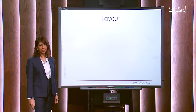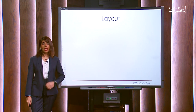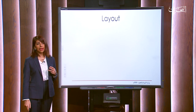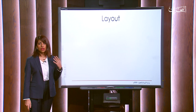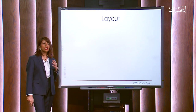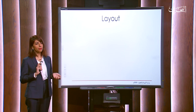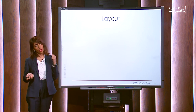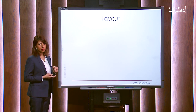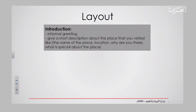Now let's move to the second objective: the layout of a descriptive email. As you know, each piece of writing should have three main paragraphs — the introduction, the body, and the conclusion — but of course the content differs from topic to topic. Let's see what the layout of a descriptive email looks like. For the introduction, as you can see, it starts with an informal greeting.